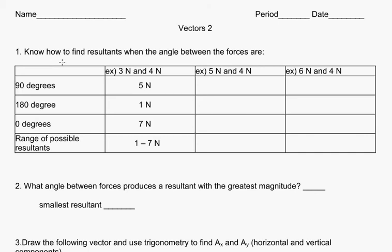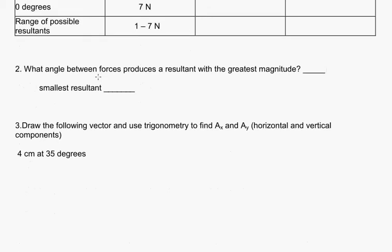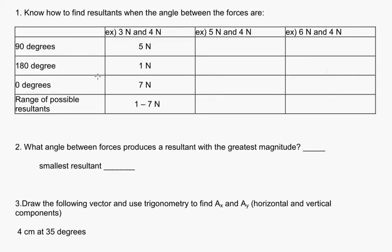Welcome back to part 2 class. Now let's take a look at question number 2. What angle between forces produces a resultant with the greatest magnitude? And then which one produces the smallest magnitude or smallest resultant? So let's take a look.